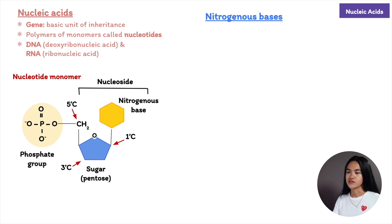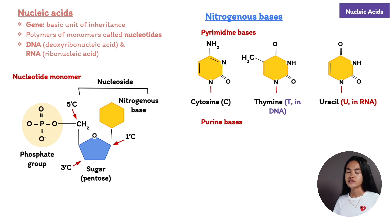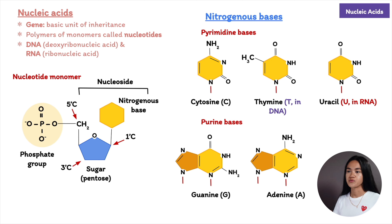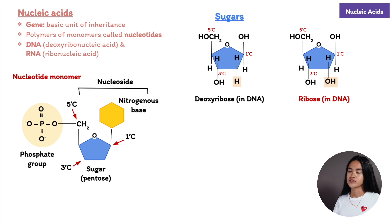There are two families of nitrogenous bases: pyrimidines and purines. A pyrimidine has one six-membered ring of carbon and nitrogen atoms — the pyrimidines are cytosine, thymine, and uracil. Purines are larger with a six-membered ring fused to a five-membered ring — the purines are adenine and guanine. Adenine, guanine, and cytosine are found in both DNA and RNA; thymine is found only in DNA and uracil only in RNA. In DNA the sugar is deoxyribose, and in RNA it is ribose — the only difference being that deoxyribose lacks an oxygen atom on the second carbon.